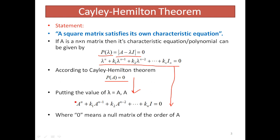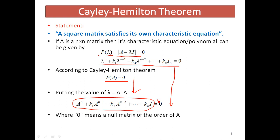This means P in terms of A, that is P(A), equals 0. We simply replace lambda by A. The expression becomes: Aⁿ plus some constant times Aⁿ⁻¹ plus some constant times Aⁿ⁻² and so on equal to a null matrix — because the expression is in terms of matrix A, the zero on the right-hand side is a null matrix of the order of system matrix A.